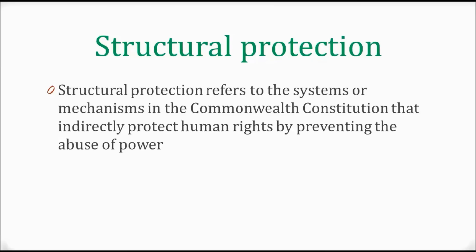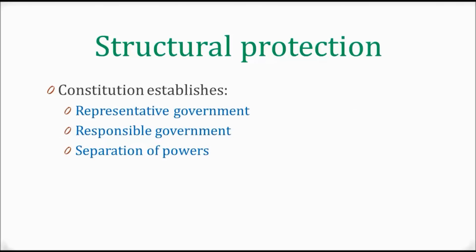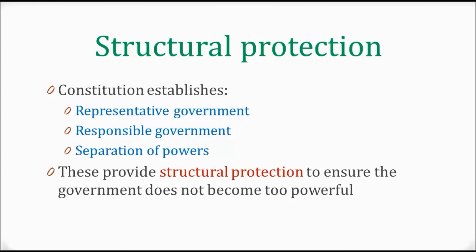Structural protection refers to the systems or mechanisms in the Commonwealth Constitution that indirectly protect human rights by preventing the abuse of power. The Constitution establishes a number of different mechanisms that help prevent the abuse of power, including representative government, responsible government, and separation of powers — things we've already covered in Area Study 1. They basically ensure that the government does not become too powerful.